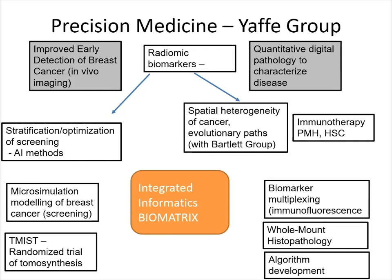We have a strong interest in what we call radiomic biomarkers — measurements that can be derived from images, either as direct measurements or using sophisticated mathematical transformations. On the side of in vivo early detection, we're looking at how we can use measurements on images to predict when a particular type of imaging will be appropriate for a cancer detection task and stratify patients to appropriate regimens for screening. Much of our work is in breast cancer, and we also do micro-simulation modeling to allow us to efficiently change variables and optimize the approach to screening.